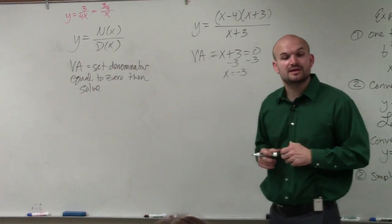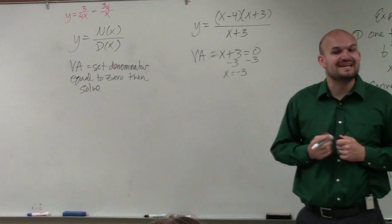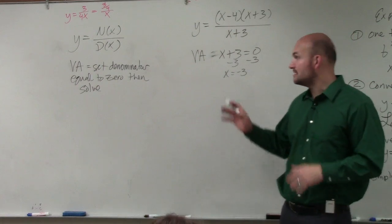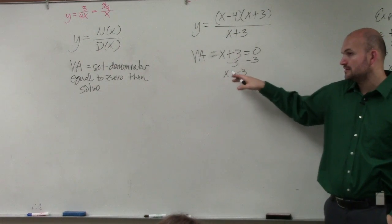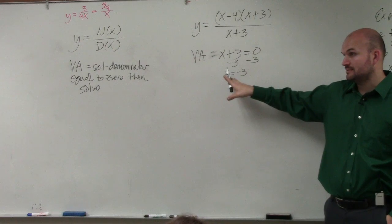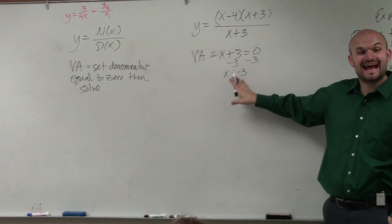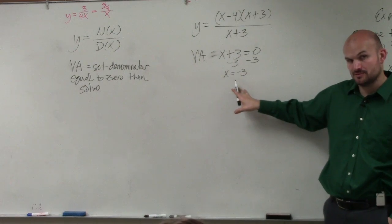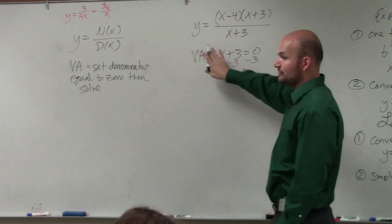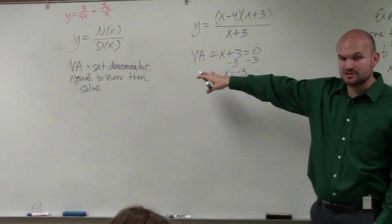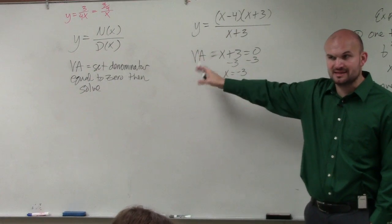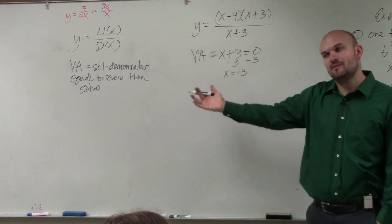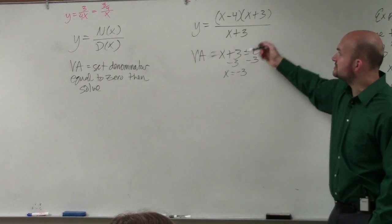However, now we have a little bit more time. We can get into removable and non-removable discontinuities. Because mathematically, this is not a part of the domain. However, it's not an asymptote, actually, in this case. This is actually not an asymptote. So my definition is still the same: define the vertical asymptote, set the denominator equal to 0. However, ladies and gentlemen, what you should see...